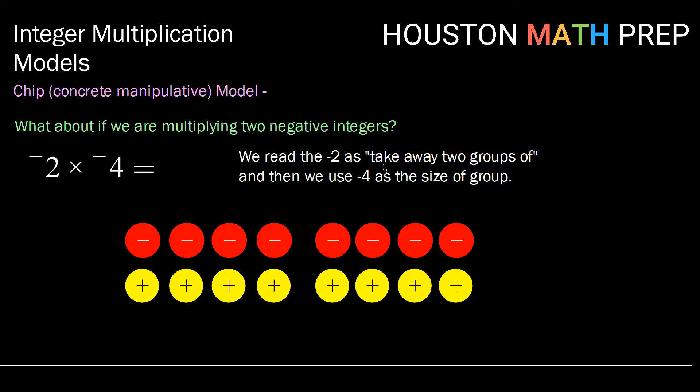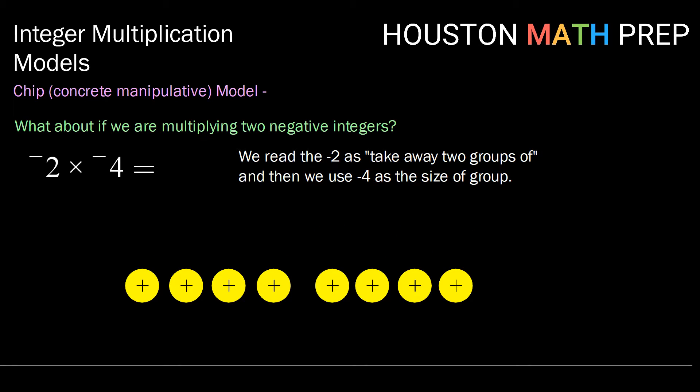Let's think about this again. We're going to take away two groups of negative 4. If I take those away and look at what's left, I have eight positive chips left. So negative 2 times negative 4 will be positive 8.